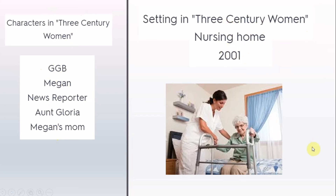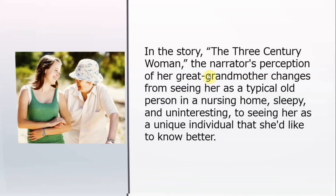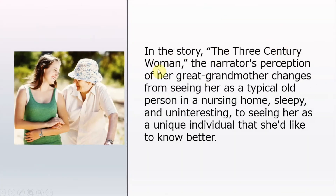In the story The Three-Century Woman, the narrator's perception of her great-grandmother changes from seeing her as a typical old person in a nursing home — sleepy and uninteresting — to seeing her as a unique individual that she'd like to know better.